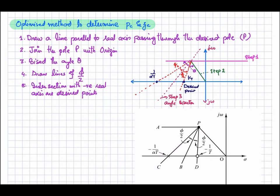I am going to discuss the method that gives the maximum value of the static error constant, minimizing steady-state error. First, draw a line parallel to the real axis passing through the desired dominant closed-loop pole P. Then join the pole with the origin with a line.